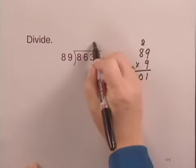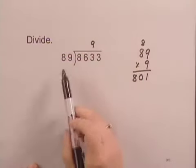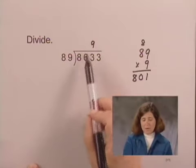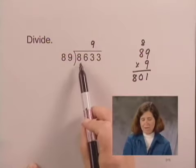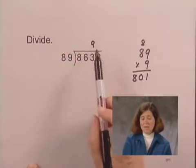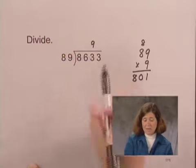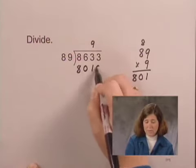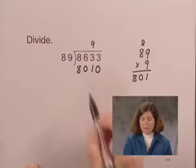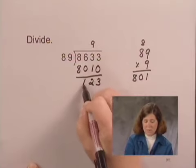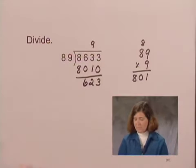We write the 9 above the 3, since we're dividing 89 into 863, and then the product 89 times 9, we subtract from 863. But technically, it's 9 tens. So it's 90 times 89, and that is 8,010. Now we subtract to find out what's left to divide, and we have 623 left to divide.